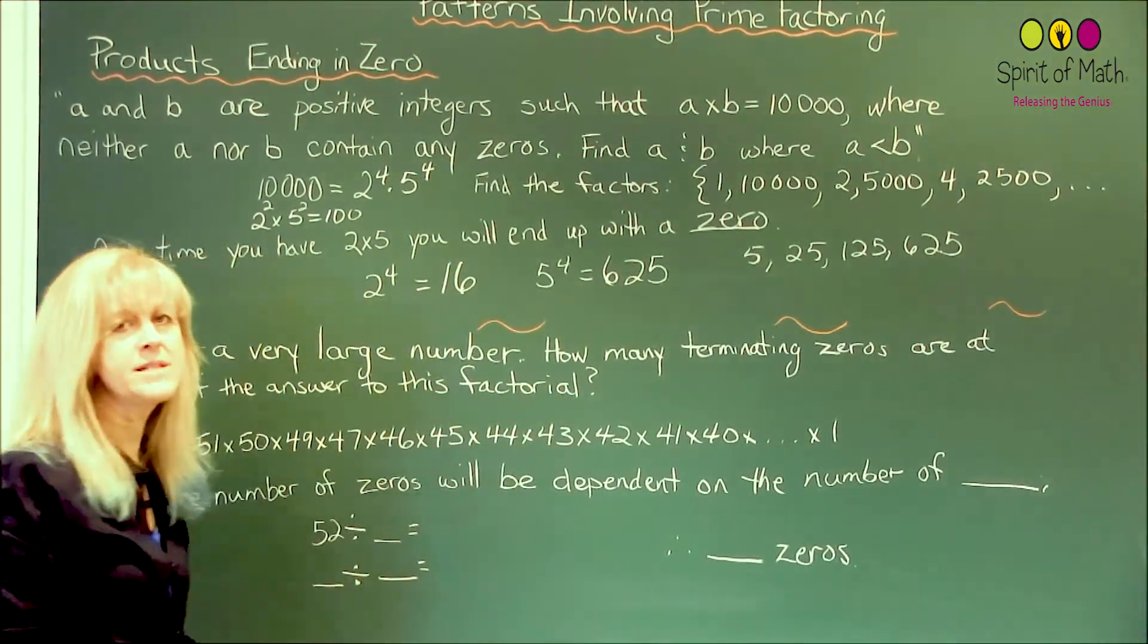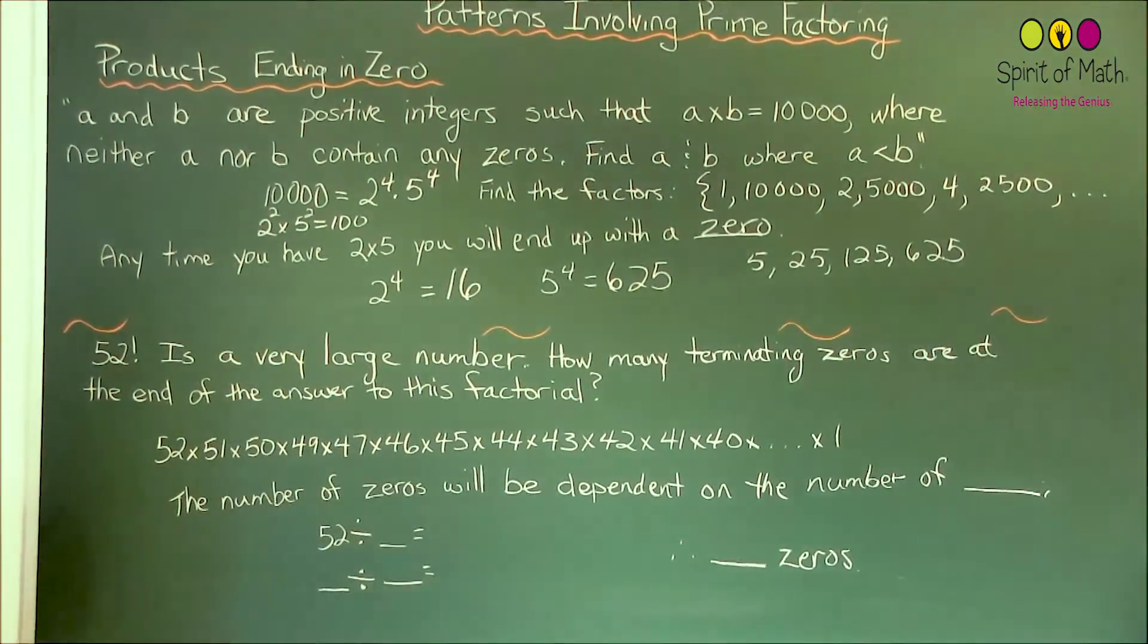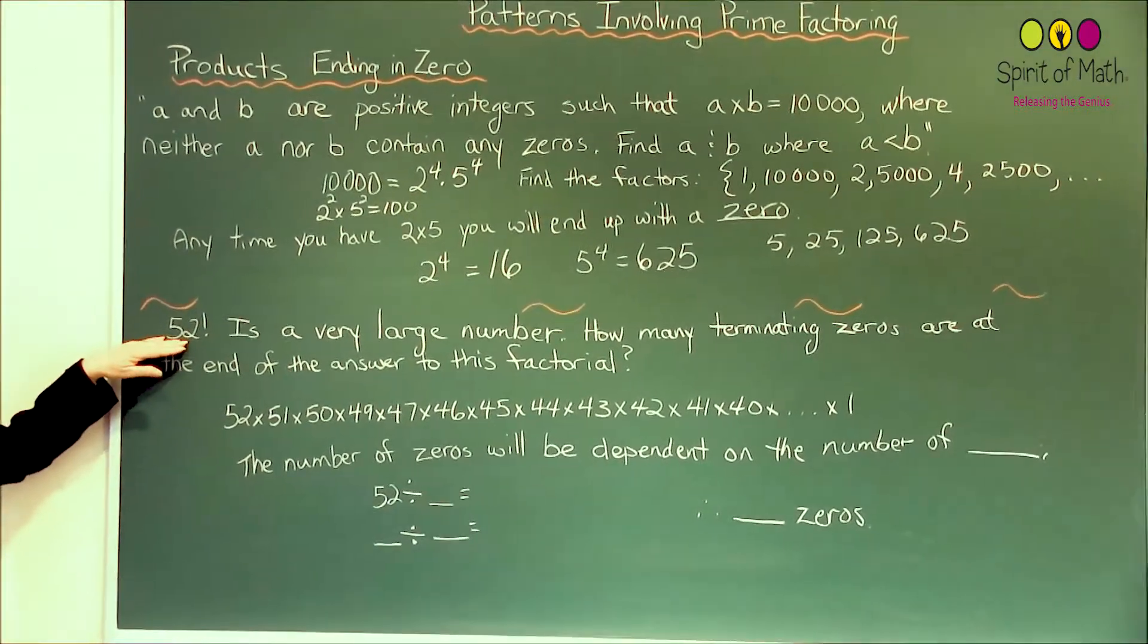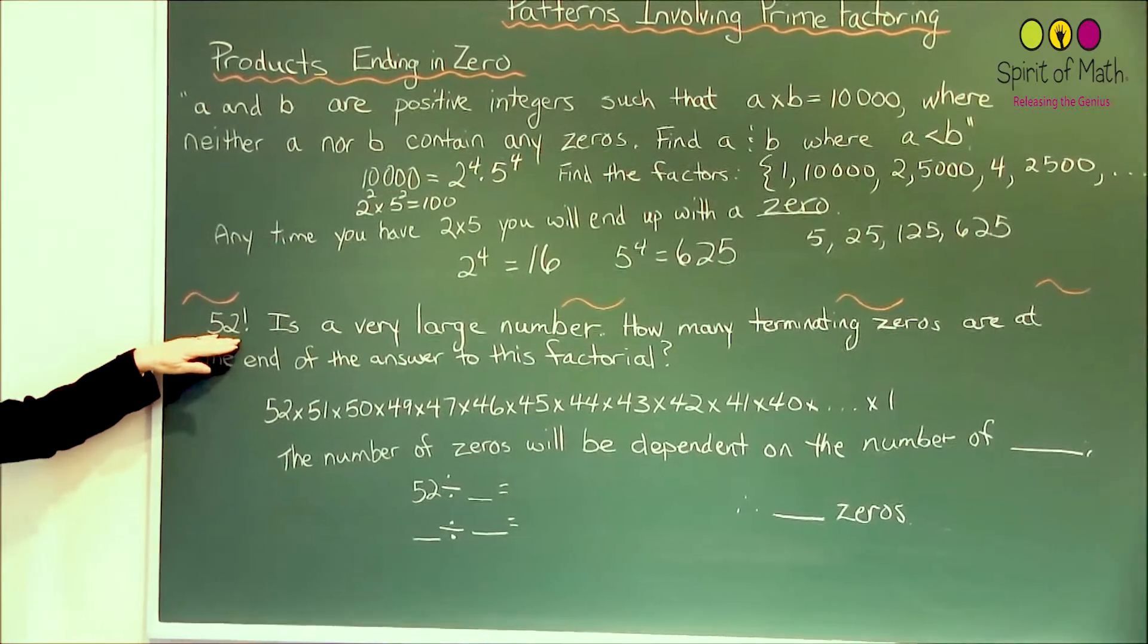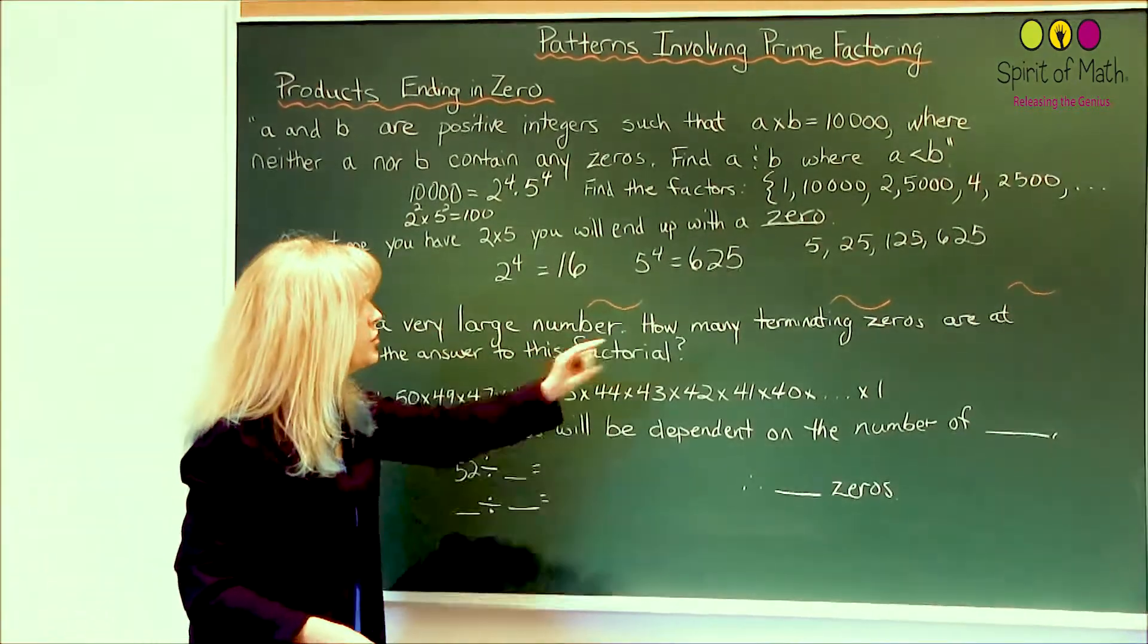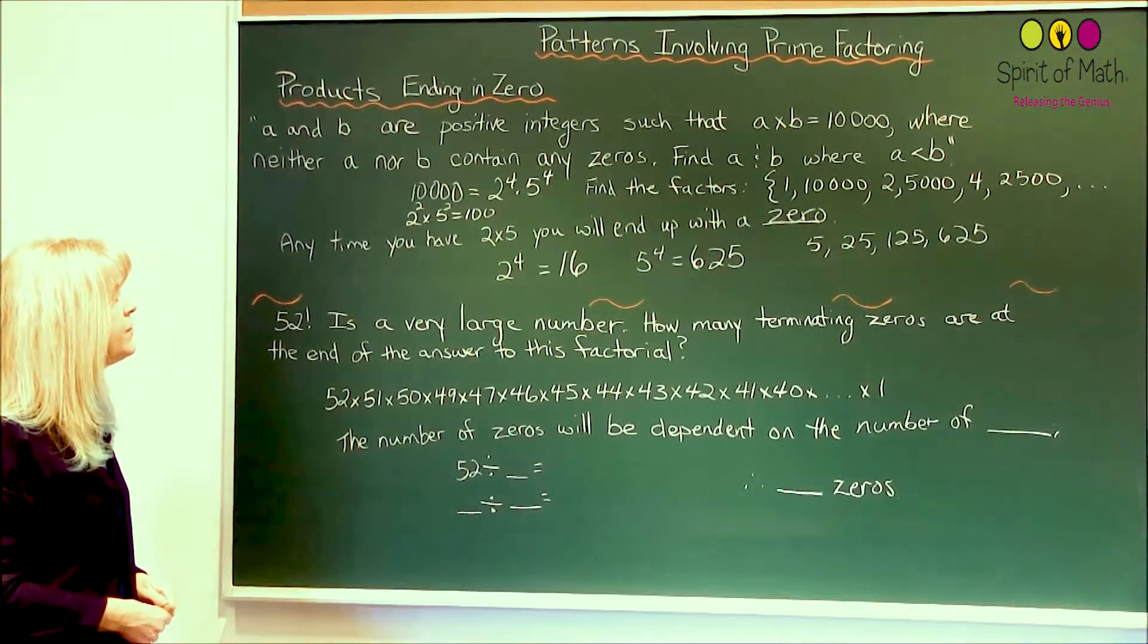All right, let's go to the next type. Again, using prime factors. This time, you've got the factorial, 52 factorial, is a very large number. How many terminating zeros are at the end of the answer to this factorial?